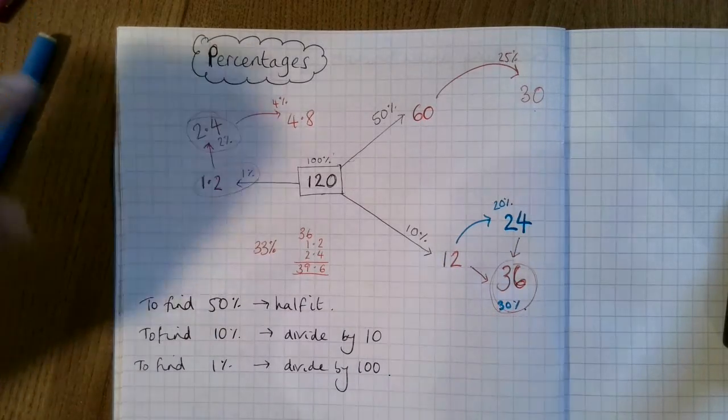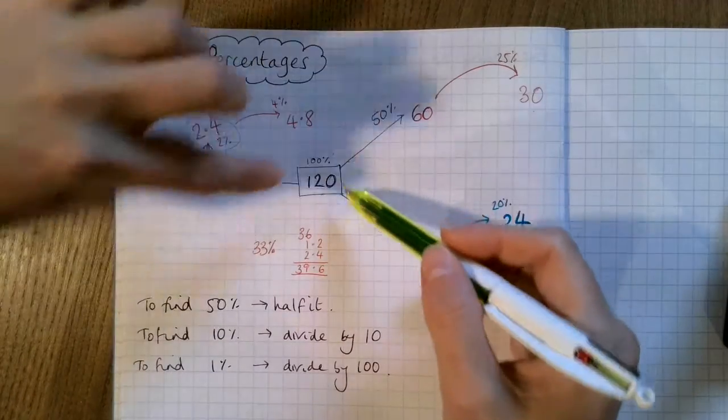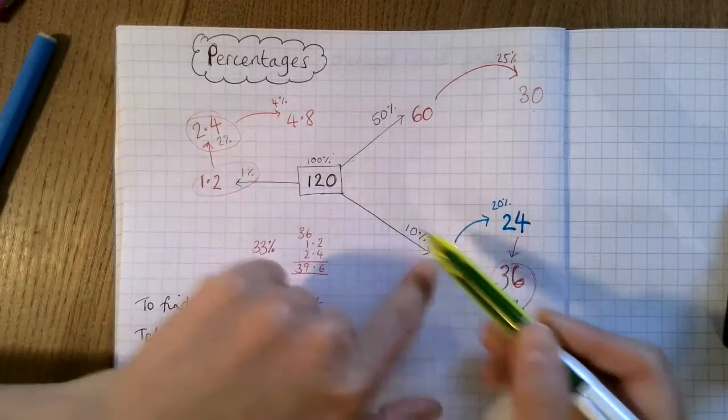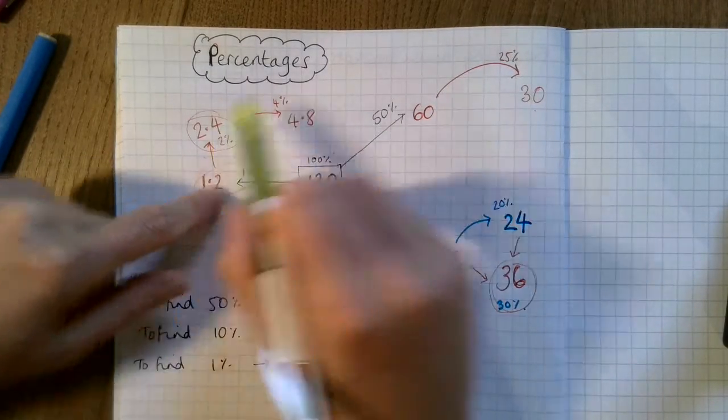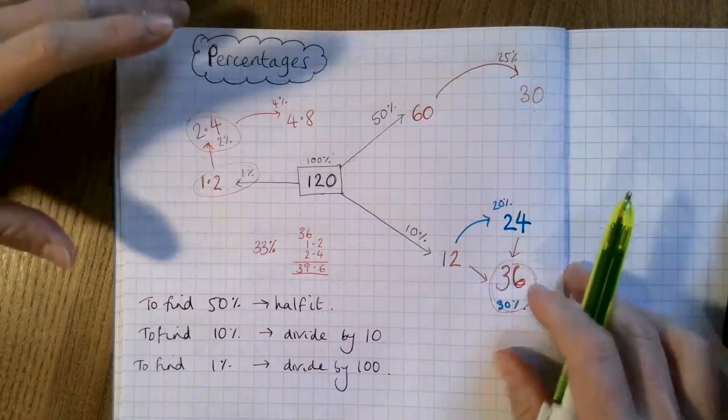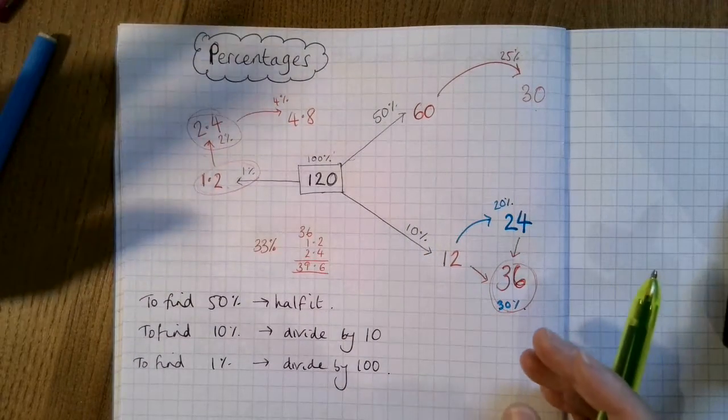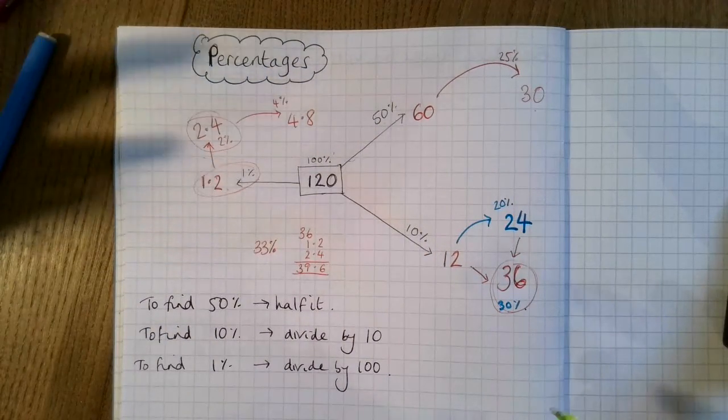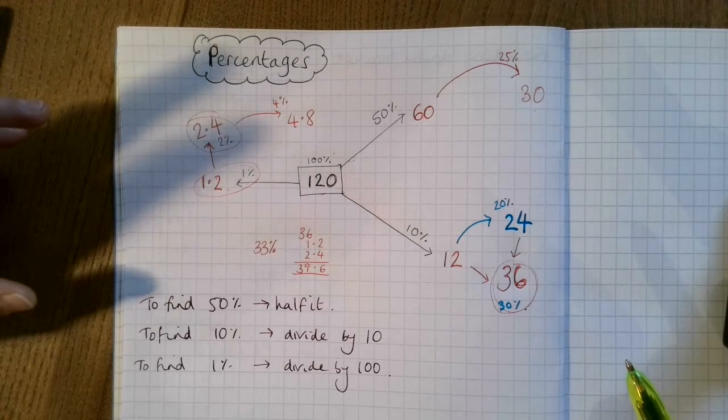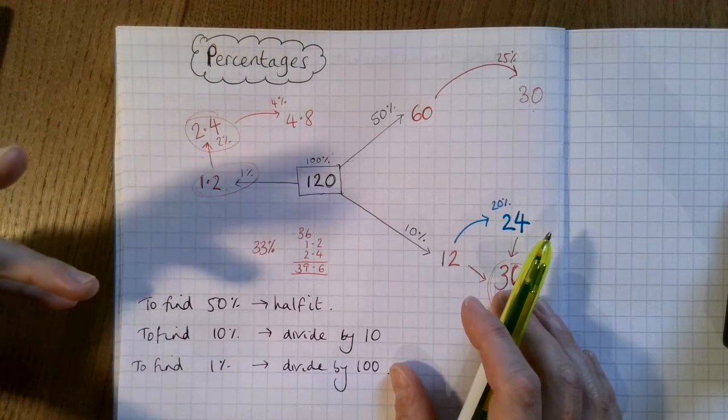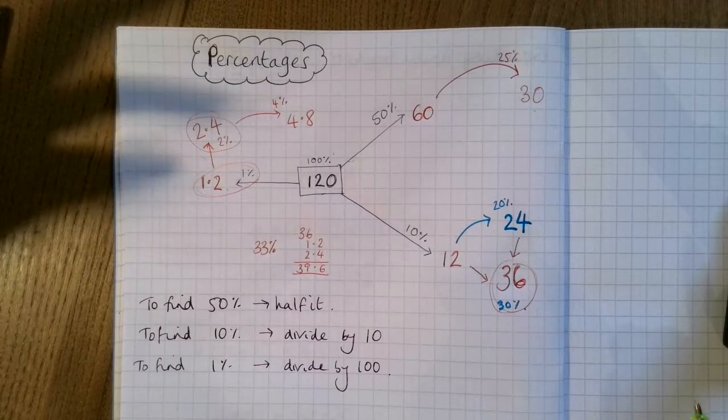So I guess what I'm trying to say is that if we just know how to find 10%, 50%, and 1%, we can keep doing things to these, like halving them, doubling them, timesing them by 3, and we'll end up being able to find any percentage that we might need.